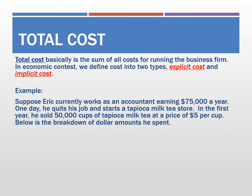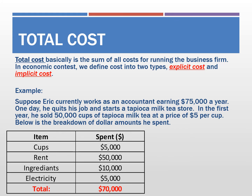Let's look at this example. We have a friend named Eric. He is currently working as an accountant earning $75,000 a year. One day he quits his job and starts a tapioca milk tea shop. In the first year, he sold 50,000 cups at $5 per cup. The costs he broke down are: cups $5,000, rent $50,000, ingredients $10,000, electricity $5,000 — totaling $70,000 in explicit costs for that year.